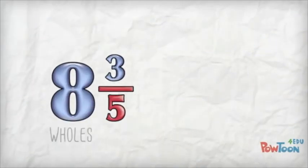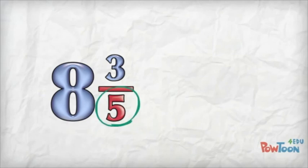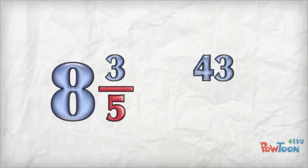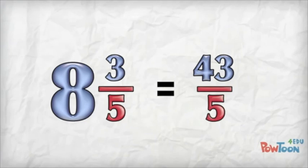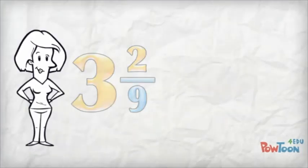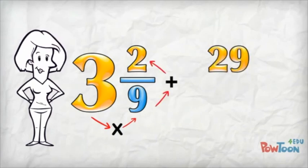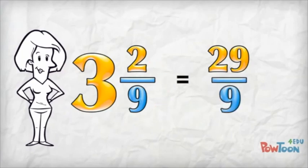Last one: eight and three fifths. Eight wholes, each whole is worth five parts, so eight times five is forty plus the remaining three — that's forty-three. Put that back over the denominator of five. Done! So when you're changing a mixed number to an improper fraction, you take the whole number and multiply it by the denominator, then add the numerator — and that's your total number of parts, your new numerator. Put it over the old denominator and you're all done!